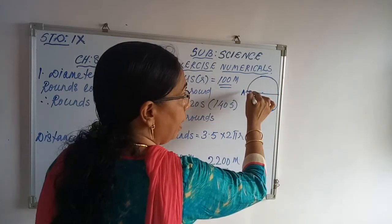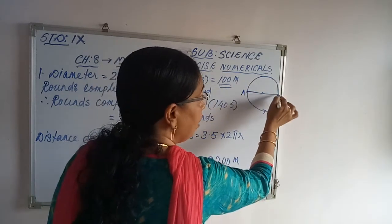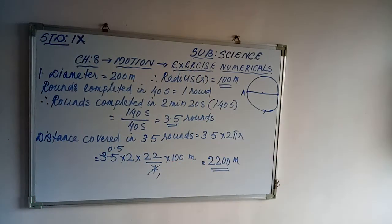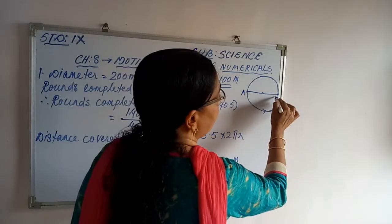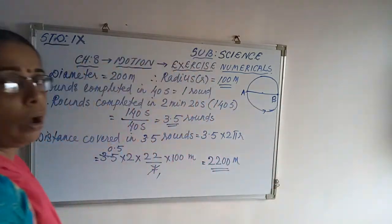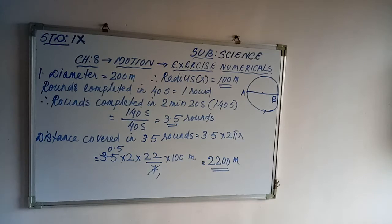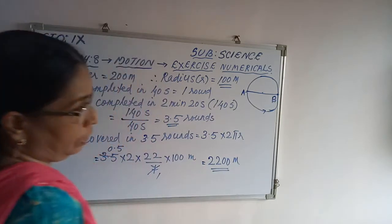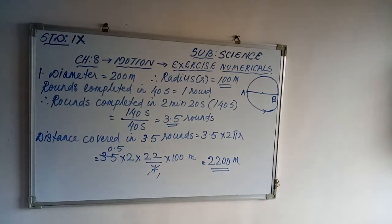After completing 3 rounds and then a half round, the athlete will be just opposite — diametrically in the opposite direction. So after 3.5 rounds, the displacement will be equal to AB, where AB is the diameter of the circular track.